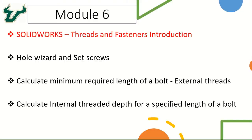Hello and welcome to module 6. In this module we will be learning how to create threads and fasteners using SolidWorks. The first part will focus on theoretical aspects of threads and fasteners. The second part will cover the hole wizard tool and set screws. The next part will discuss the minimum required length of the bolt for external threads, and the last part will focus on calculating the internal threaded depth for a specified length of a board.